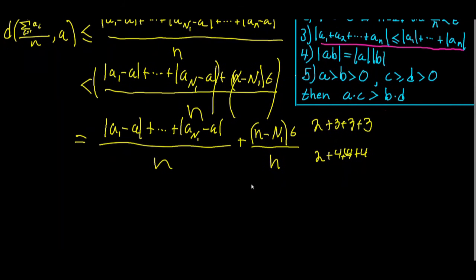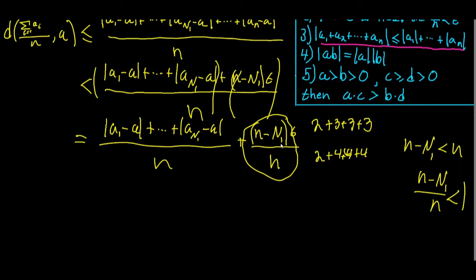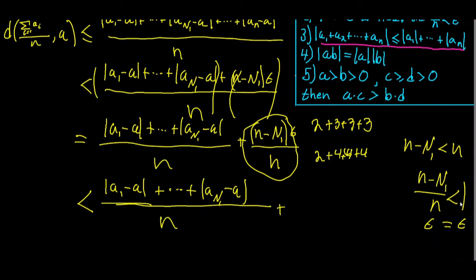Since n minus N₁ is less than n, the fraction n minus N₁ over n is strictly less than 1. By helpful fact 5, if we substitute 1 in for this fraction, we get a strictly larger value: epsilon over n, excuse me, we get the first part plus just epsilon. So our distance is strictly less than the absolute value of a₁ minus a plus all the way up to absolute value of a_{N₁} minus a, over n, plus epsilon. We've made a lot of progress, but N₁ alone may not work because of this remaining term.